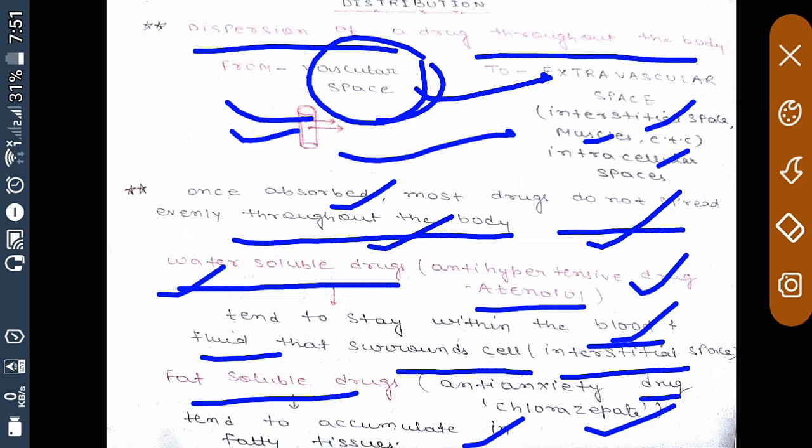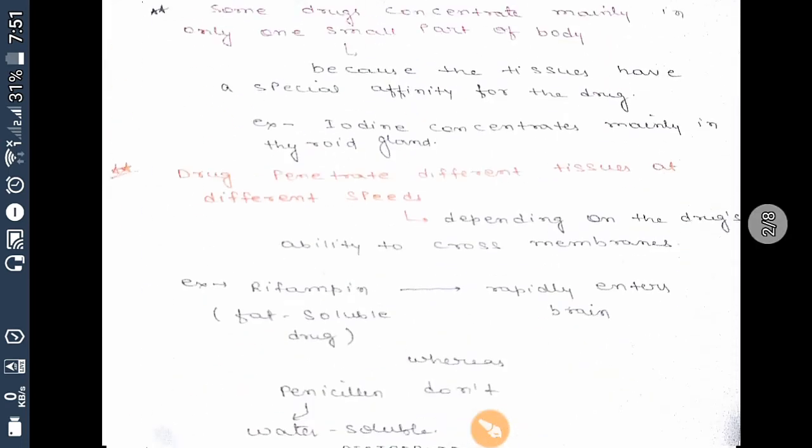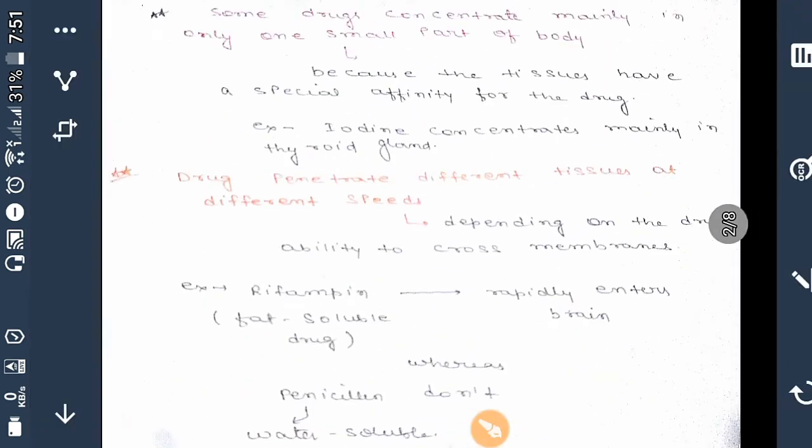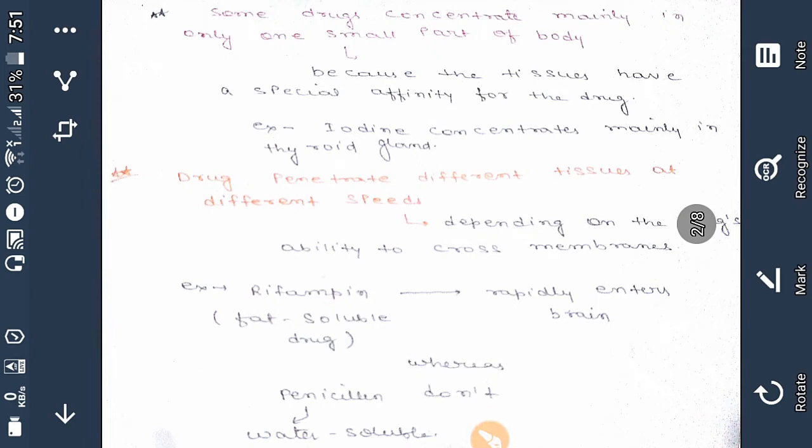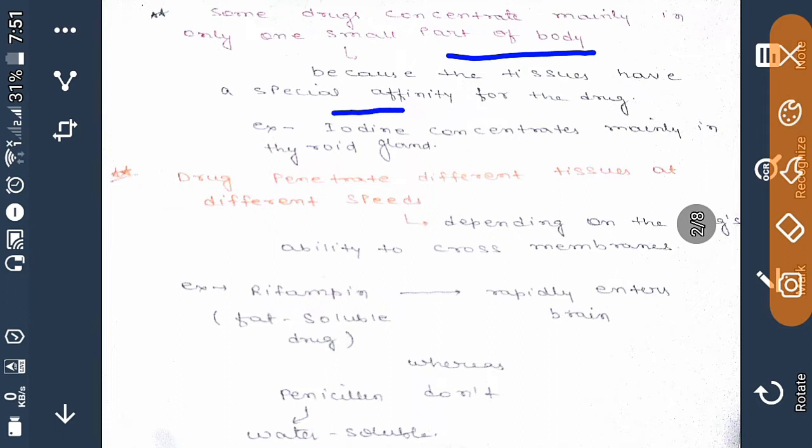Moving to the next slide, some drugs concentrate mainly in only some part of the body because those tissues have a special affinity for the drug. One example is iodine. Iodine concentrates mainly in thyroid gland.